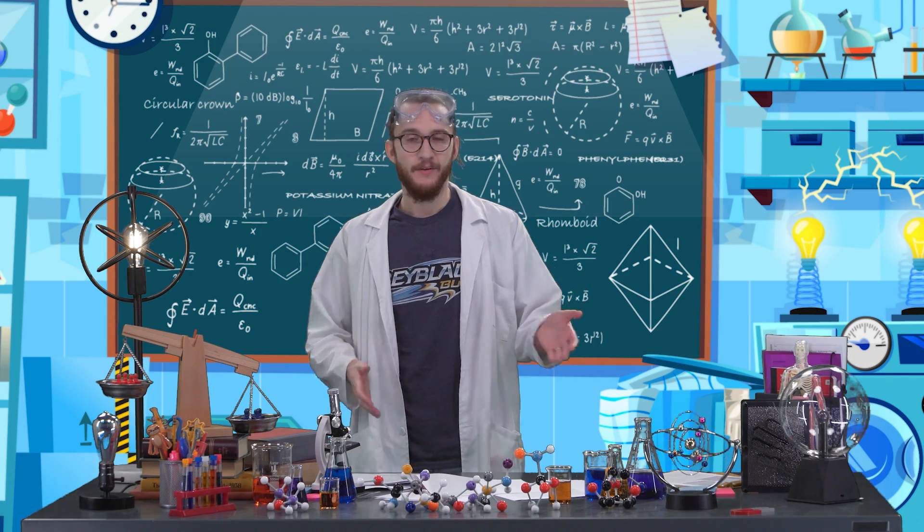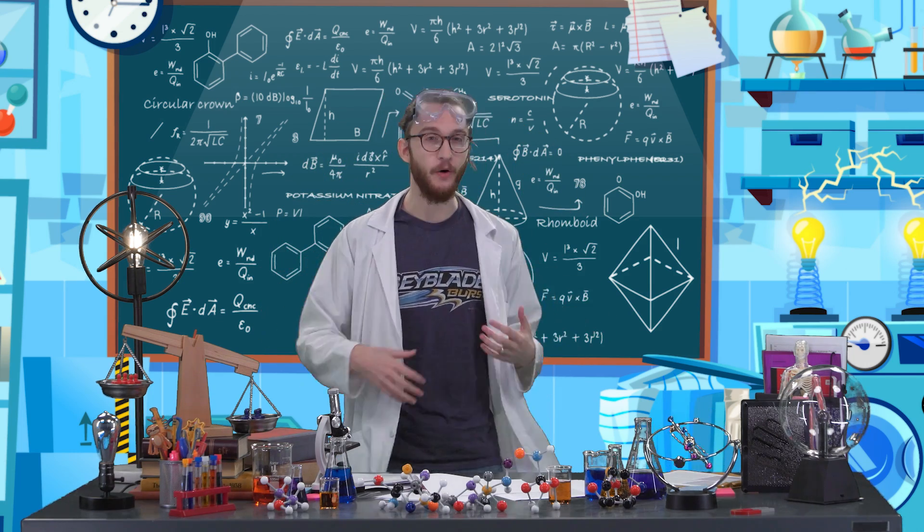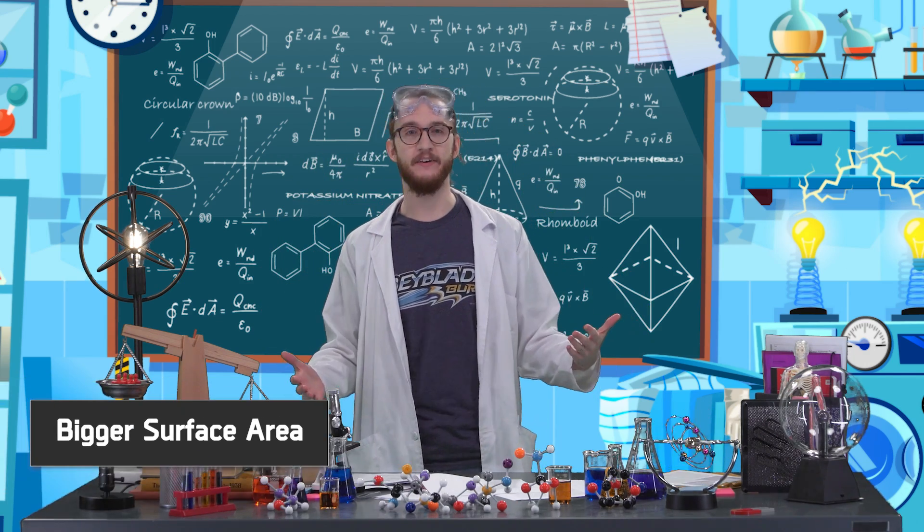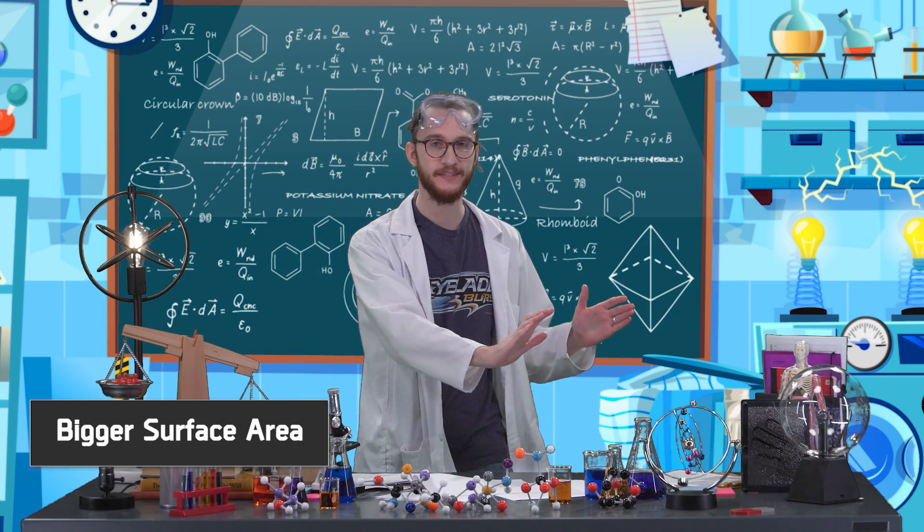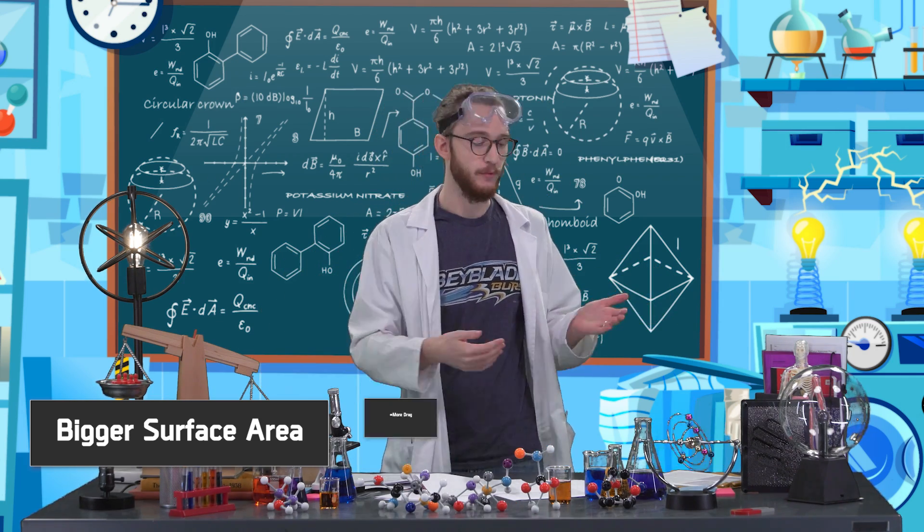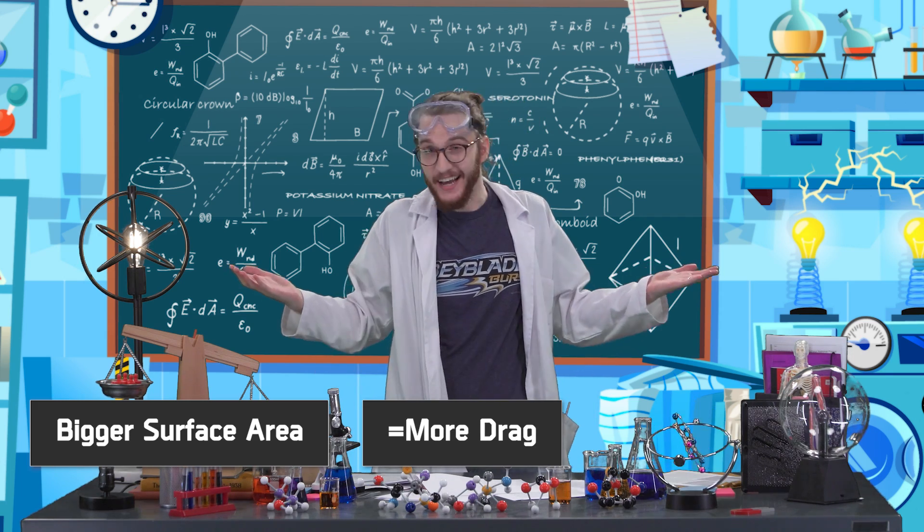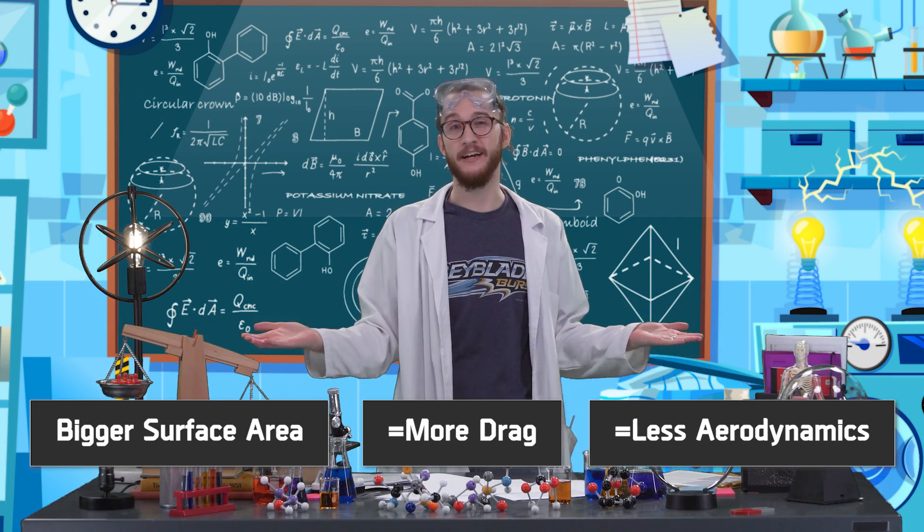That's why I had to use so much energy walking through the wind earlier. My hair, my coat, all of it meant that I had a bigger surface area. So I had to push through more air as I walked. Basically, I had more drag force working against me. I didn't have great aerodynamics.